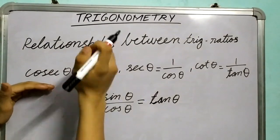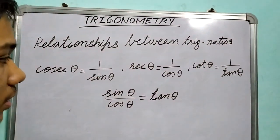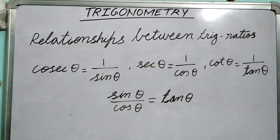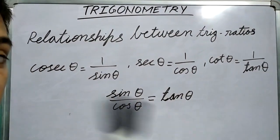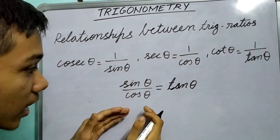So cosec θ is 1 upon sin θ, sec θ is 1 upon cos θ. So we can also say that sec θ is reciprocal of cos θ, cot θ being 1 upon tan θ. Another interesting relationship which we studied was sin θ upon cos θ gives us tan θ.